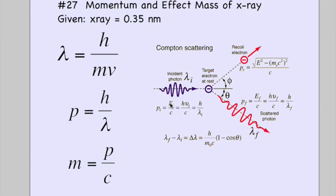Number 27: the momentum and effective mass of an x-ray. If you have 0.35 nanometers, that gives you the wavelength.